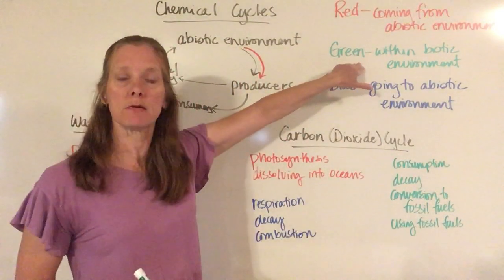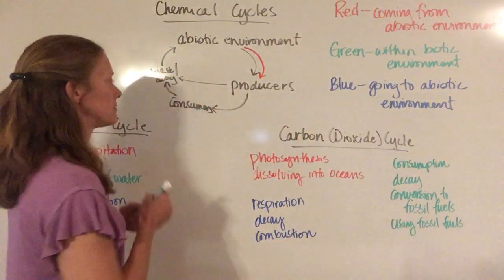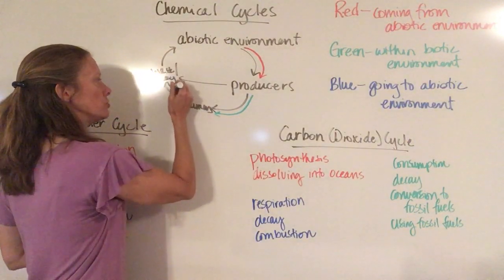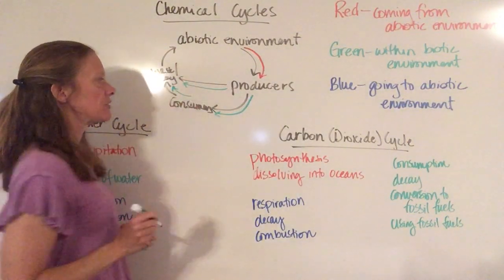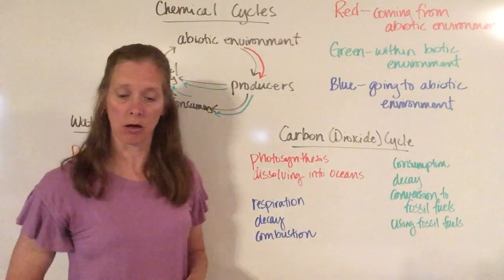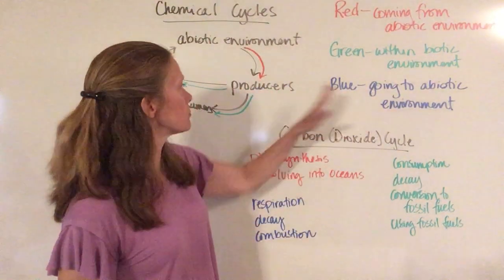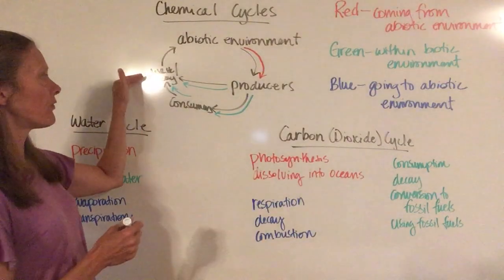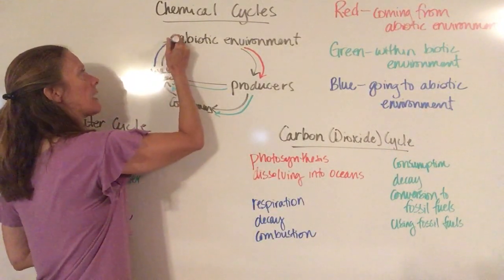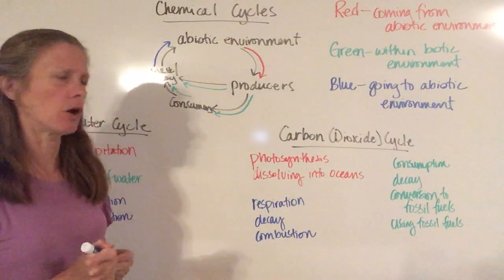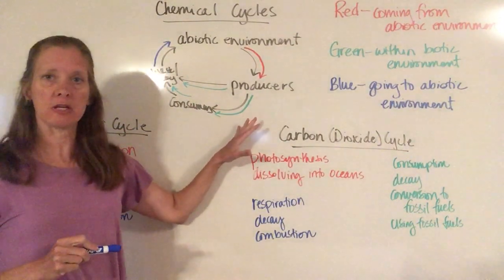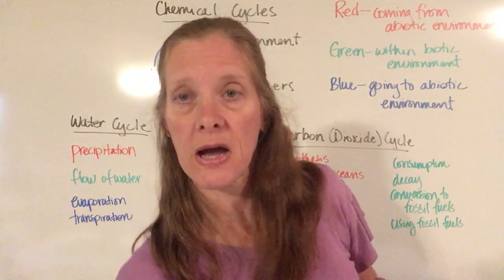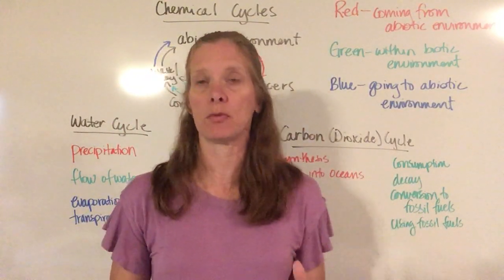If it's green, it's going to be within the biotic environment — so when it goes from the producers to the consumers and then into waste and decay, anything within the biotic environment is going to be colored green. Then when it goes from the biotic environment back to the abiotic environment — from waste and decay back to abiotic — we are going to color that blue. We'll be consistent with that through all five cycles.